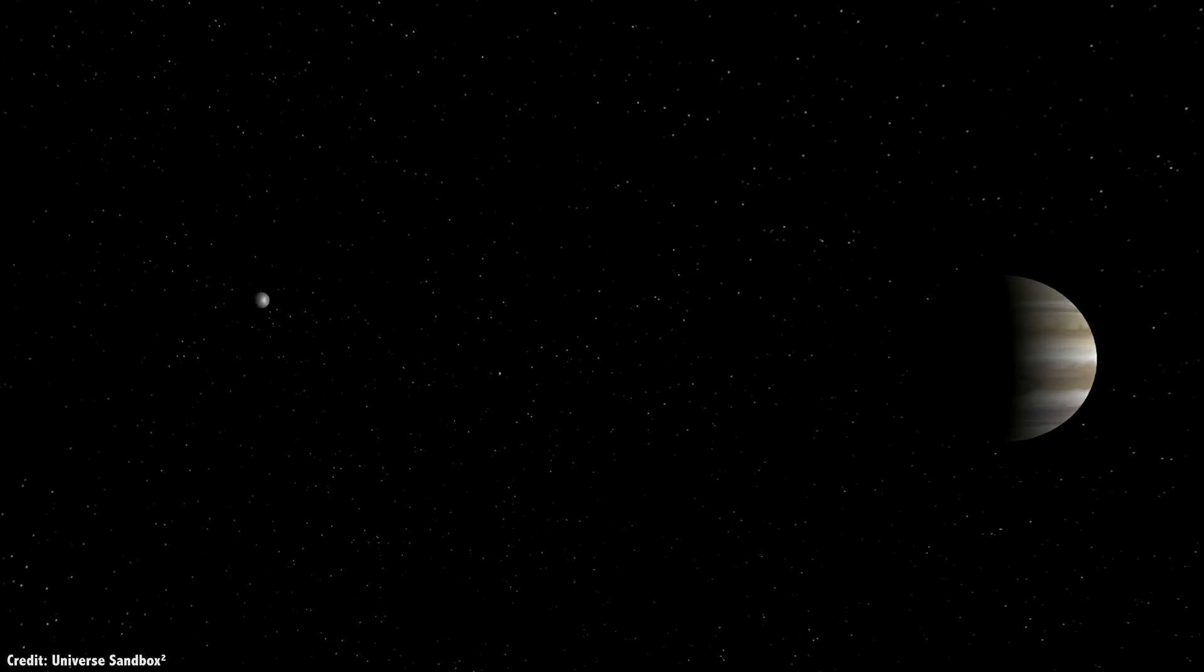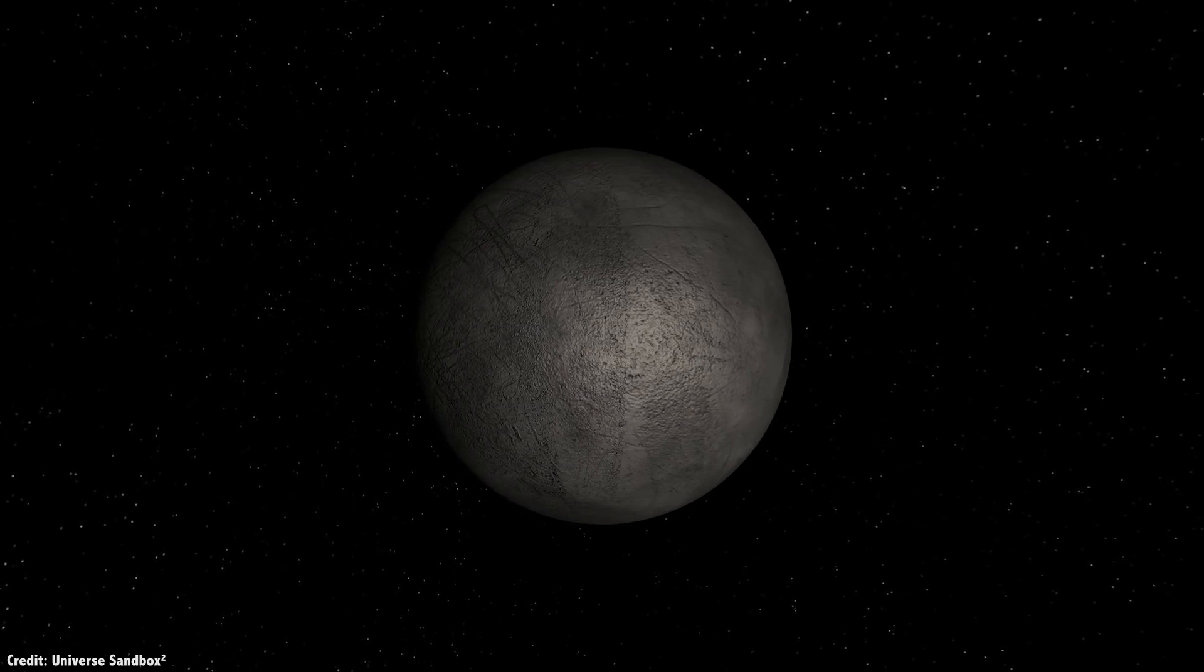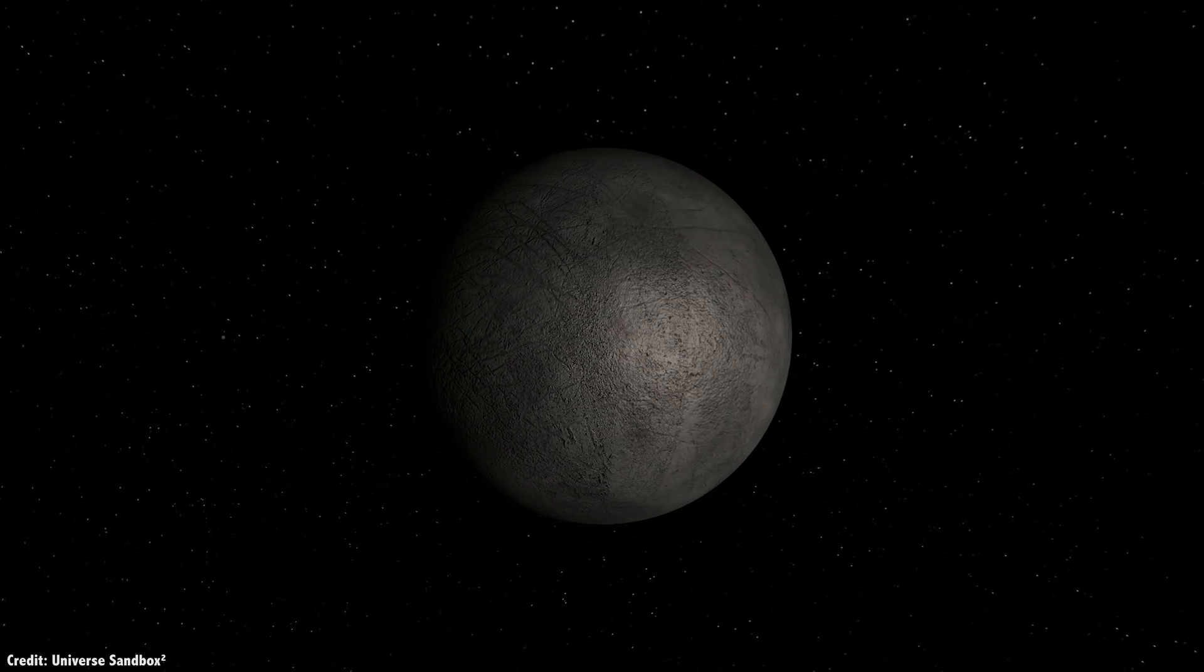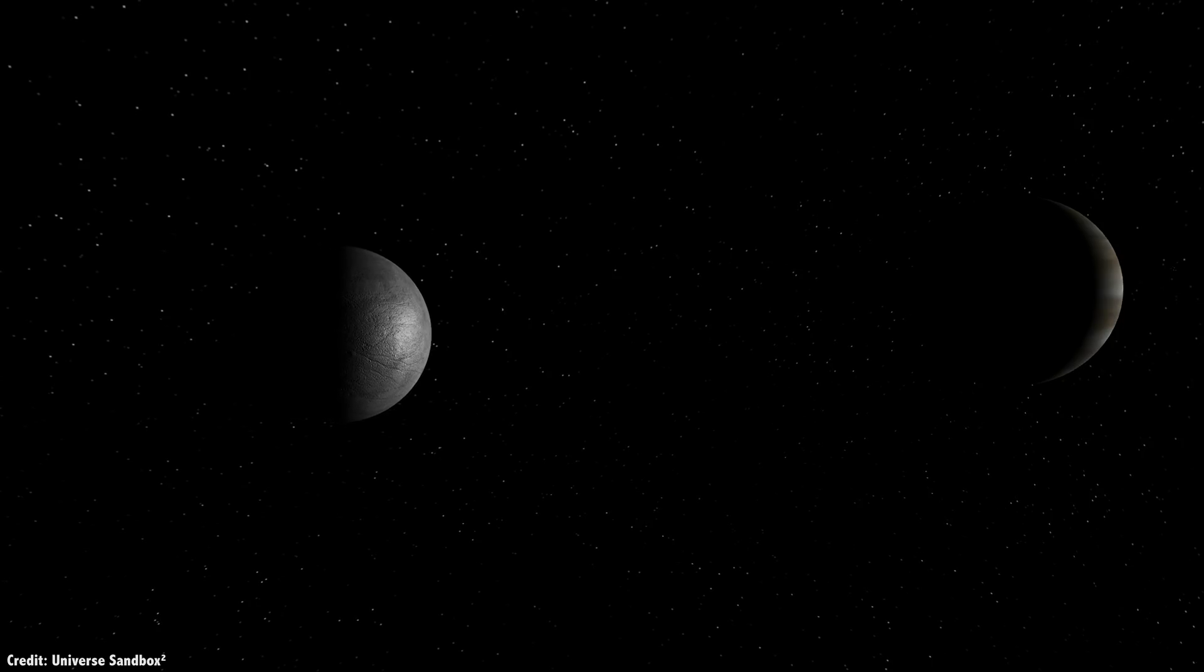Europa is the smallest of Jupiter's Galilean moons. It orbits Jupiter at a distance of about 680,000 km, about twice the distance from the Earth to the Moon. It takes about three and a half days to complete an orbit.